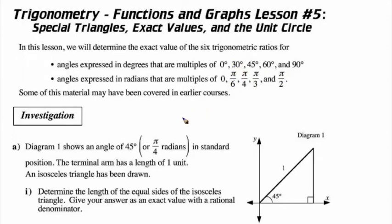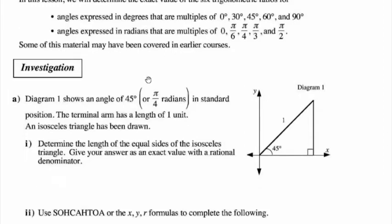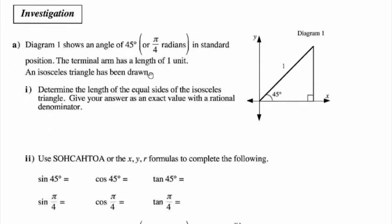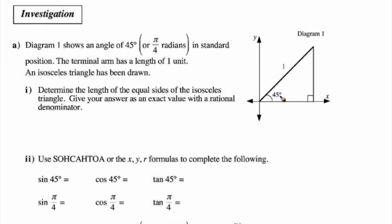Some of this math may have been covered in earlier courses, but let's take a look at this investigation. If I were to just show you this triangle here, we have a 45-degree angle, and it's an isosceles triangle.